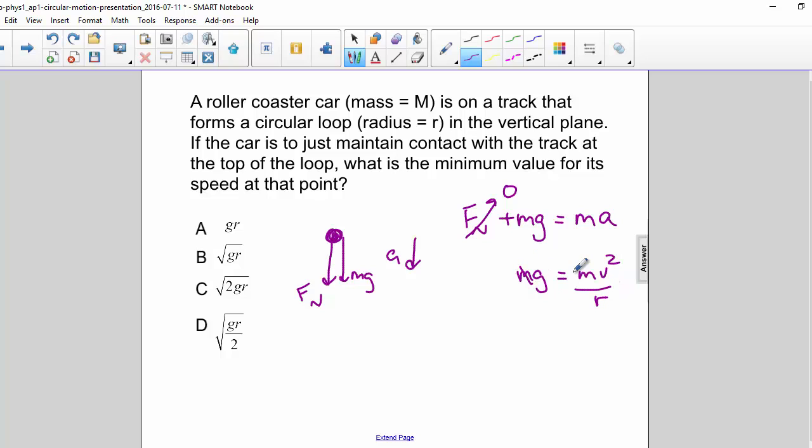So divide both sides by m, and you get g equals v squared over r. Now if we multiply both sides by r and take the square root, we get v is equal to the square root of g times r. So our correct answer is b.